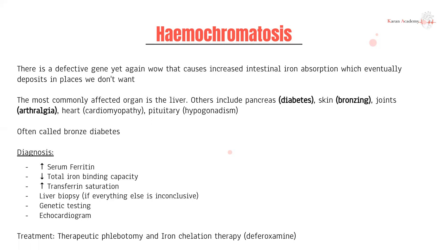Why is the liver most commonly affected? When the issue is increased levels of iron or copper, it comes from the gut, and with your portal circulation the liver is the first site — first-pass metabolism — so that's where it deposits first. Other sites include the pancreas causing diabetes, skin causing bronzing, joints causing arthralgia, heart causing cardiomyopathy, and pituitary deposits causing hypogonadism. The three to focus on are diabetes, bronzing, and arthralgia — this is why hemochromatosis is called bronze diabetes.